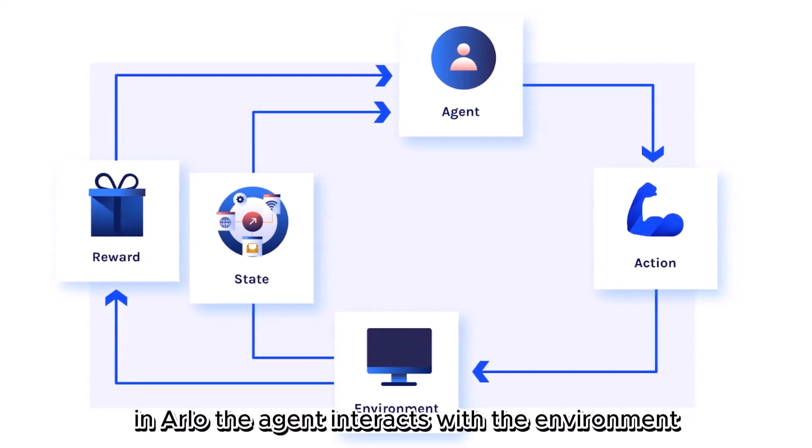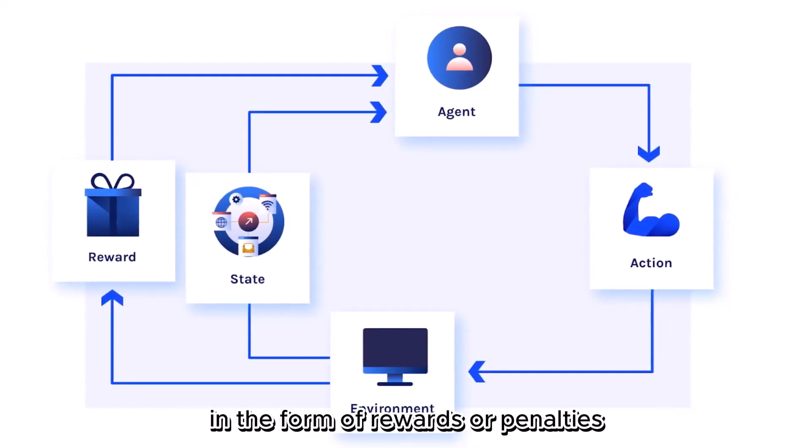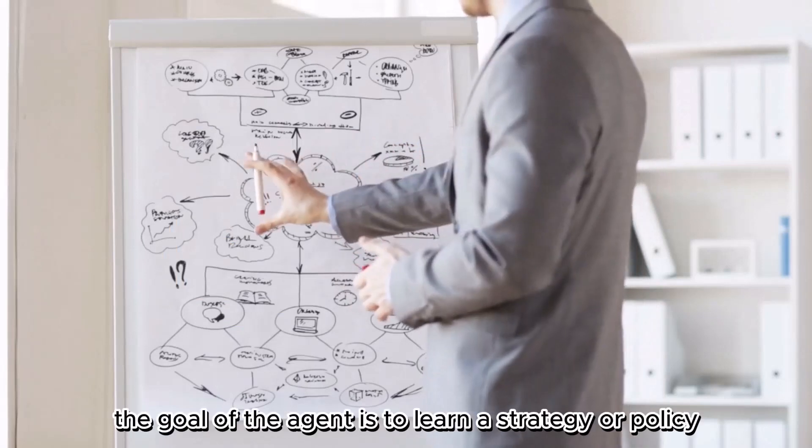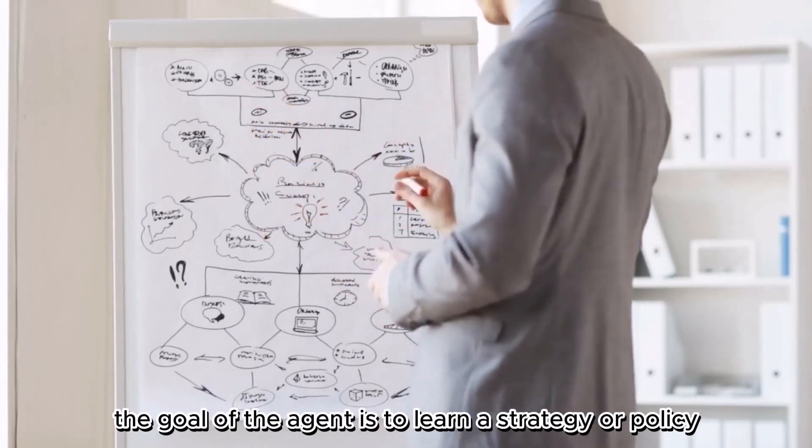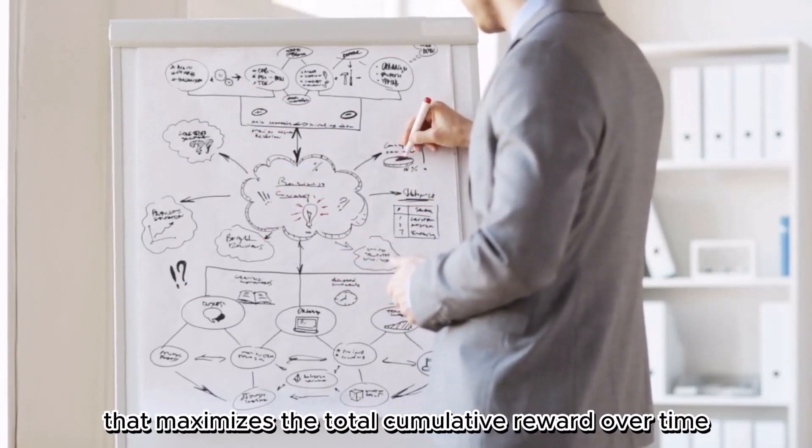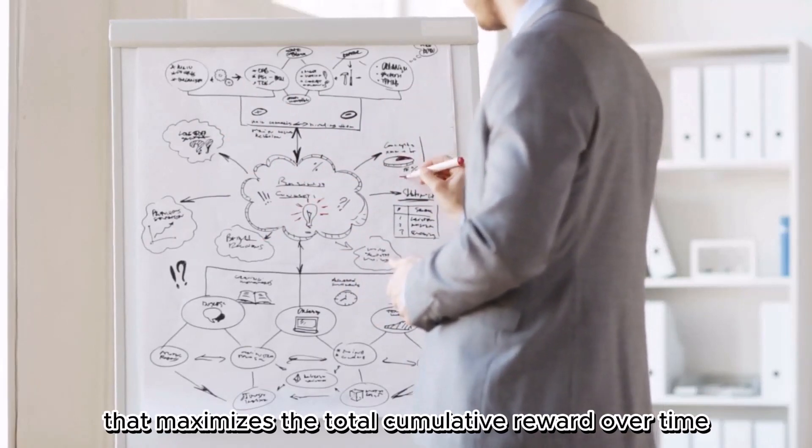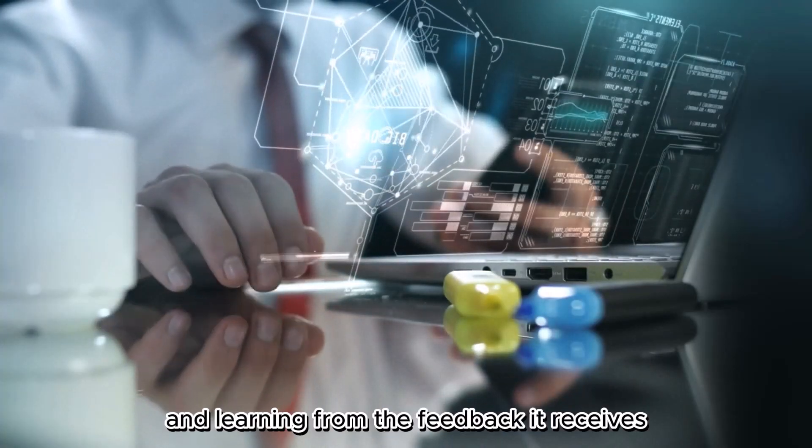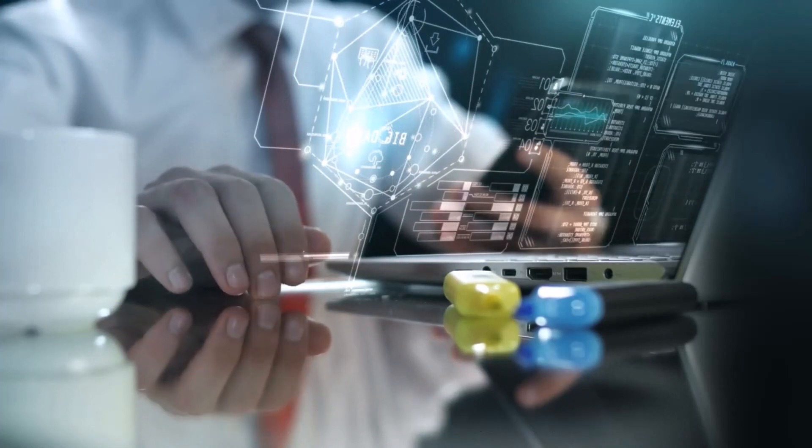The agent interacts with the environment and receives feedback in the form of rewards or penalties, depending on the actions it takes. The goal of the agent is to learn a strategy or policy that maximizes the total cumulative reward over time. It does this by exploring different actions and their outcomes and learning from the feedback it receives. Number 8.